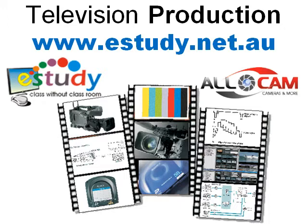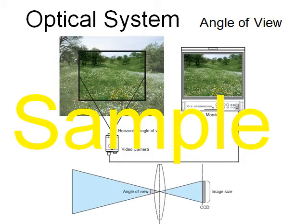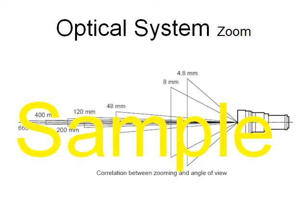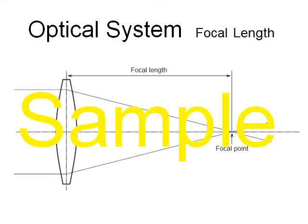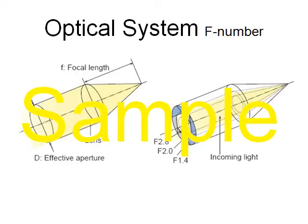Television production gives you an insight about a professional camcorder and production setup. In this course I start with some optical fundamentals as they are important to know when operating a professional camera manually. In particular when displaying special effects with blurred foreground or background vision. You should know what happens inside the camera and the lens when operating the iris manually.